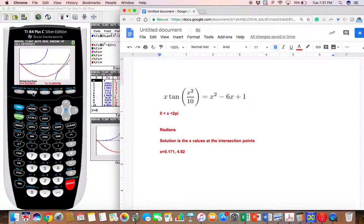I went to the window and set my x-values: x min to zero, x max to two pi. Once I had everything set up in the calculator appropriately, I graphed the left side in y1 and the right side in y2, and looked for the x-values at the intersection points. I got my two solutions.